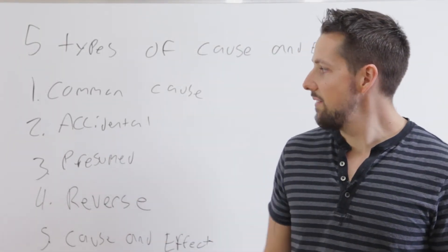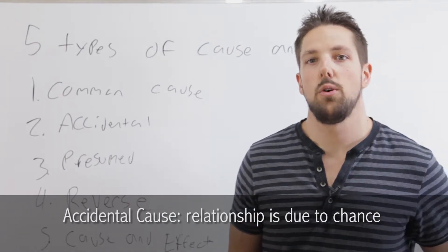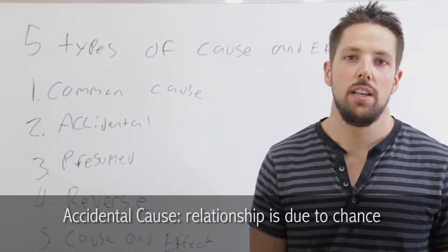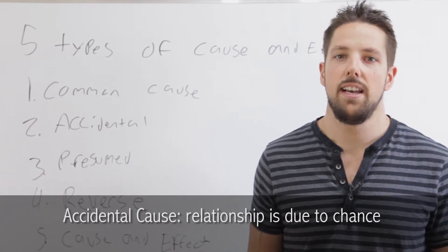The next type we have is an accidental relationship. That occurs when two variables show a correlation, but it's by pure chance. So it'd be something like a strong correlation between your hair length and how well you do on a math test.